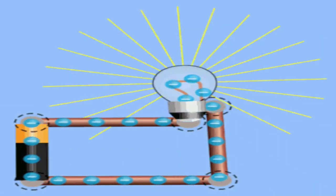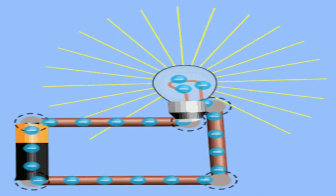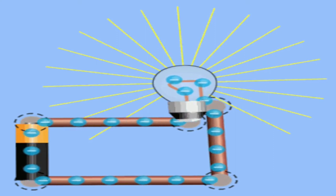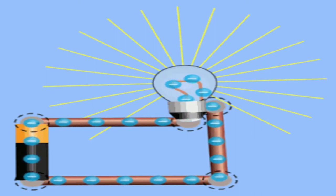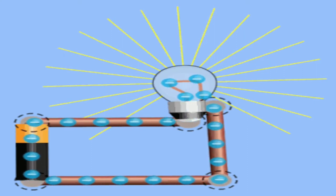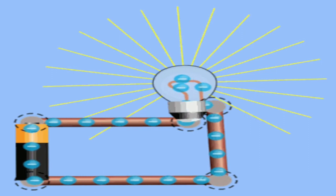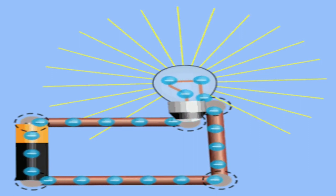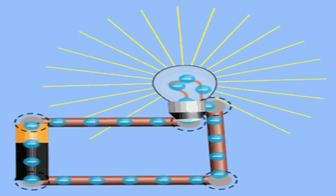Usually, there is a misconception that the electrons are consumed in an electric circuit. The bill paid to electricity board is to provide energy to move electrons through electrical gadgets like electric bulbs, fans, and engines, but not to produce electrons.